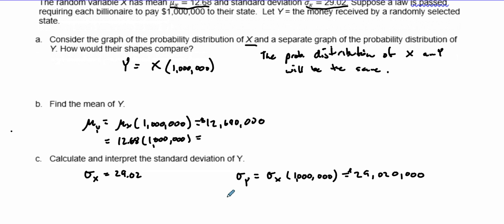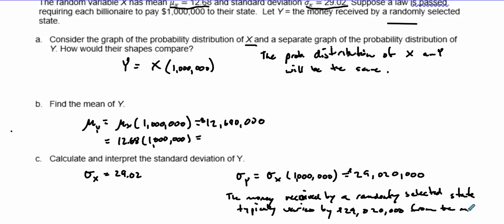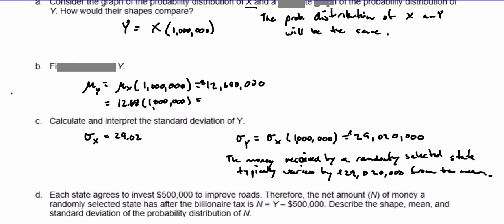The interpretation is that the money received by a randomly selected state typically varies by 29 million dollars from the mean amount.